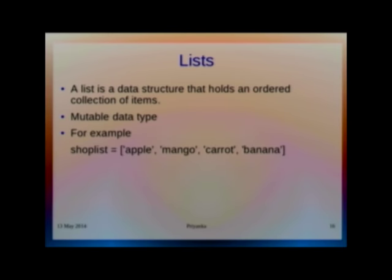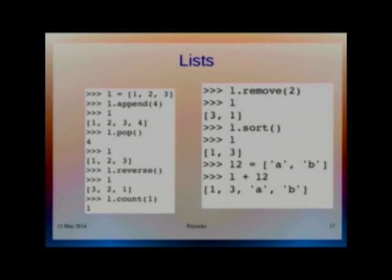For example, here I have explained the syntax. Shoplist - here I have a shopping list of what I want to buy. Whenever you are writing your list, you have to specify it in square brackets. These square brackets tell the Python interpreter that this is going to be your list. Then these are some examples.